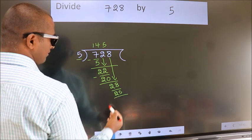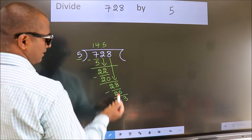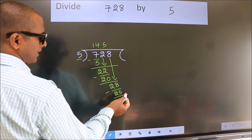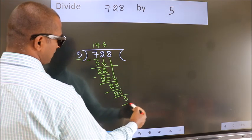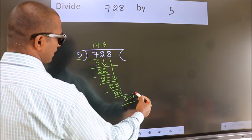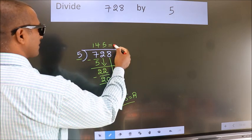Now we subtract. We get 3. No more numbers to bring down. So we stop here. This is our remainder. This is our quotient.